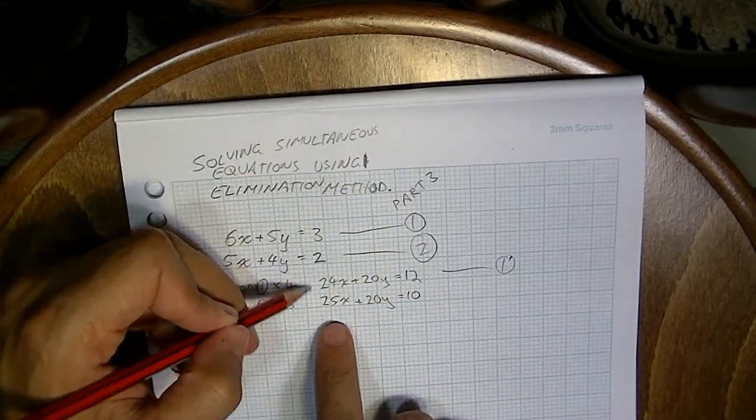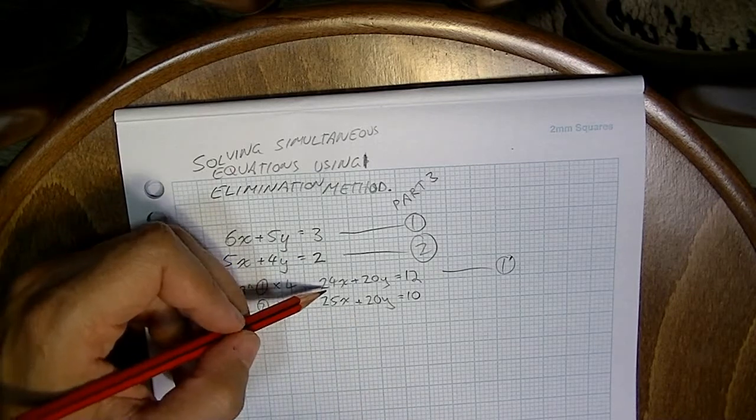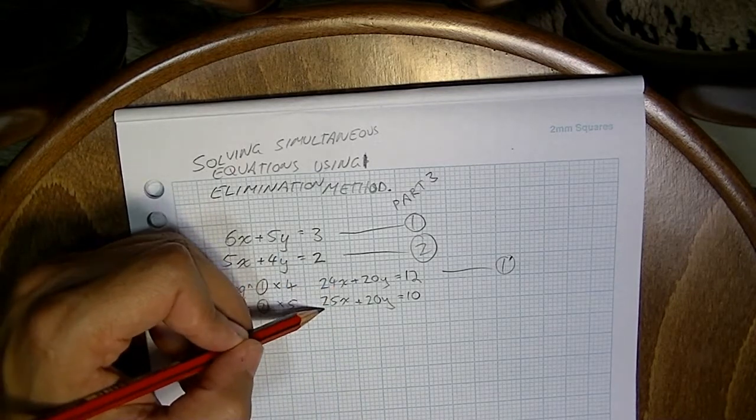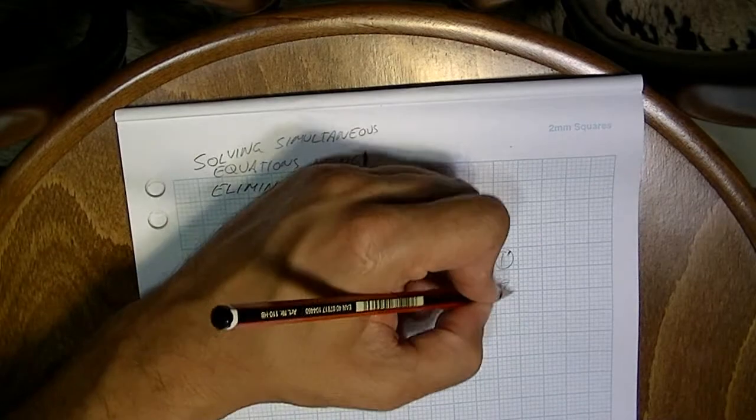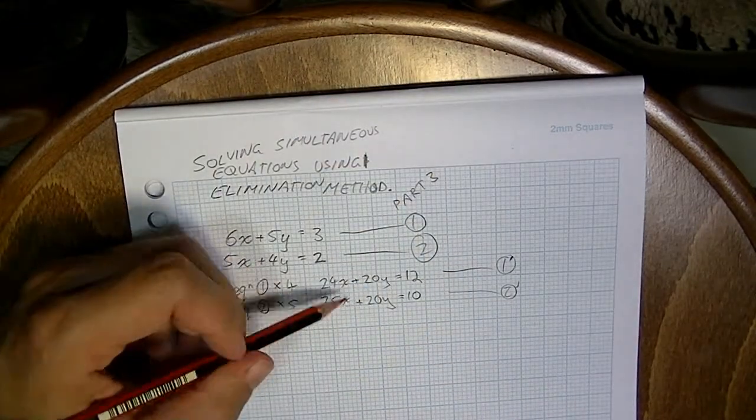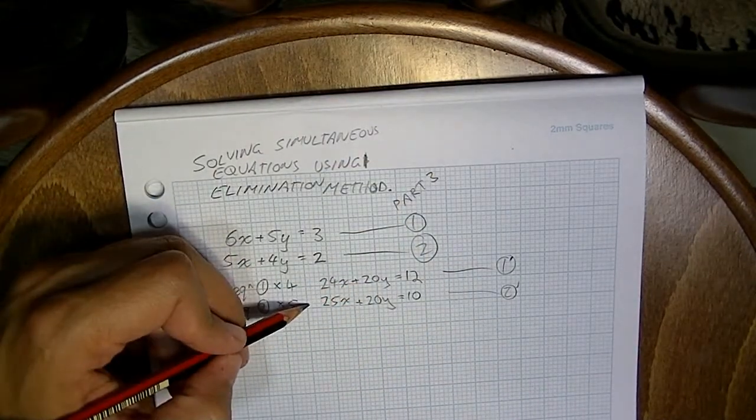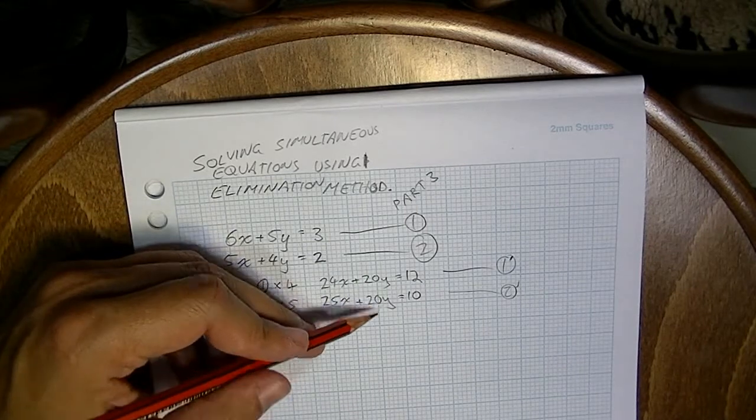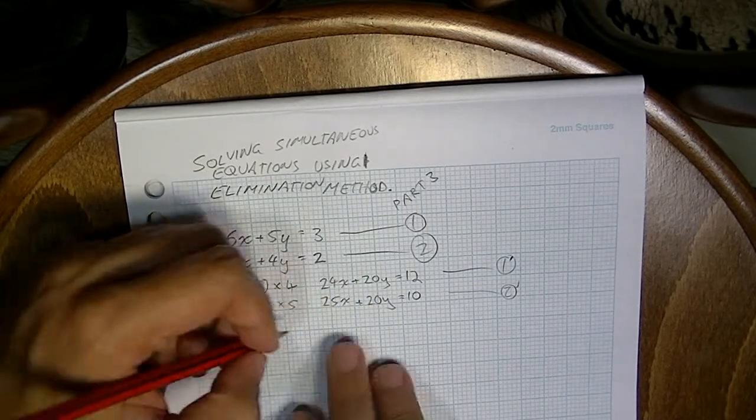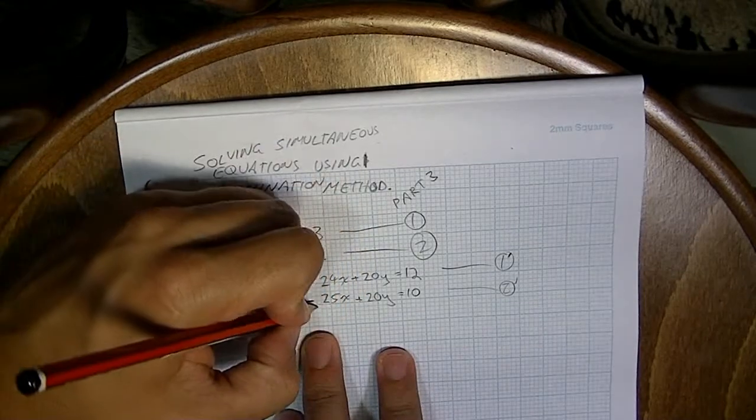Now you can see we can either add or subtract these. We've got to add or subtract these to get rid of the 20y's. So positive 20y plus 20y, that would give me 40y, so that's not going to eliminate it. I need to subtract these equations from each other.